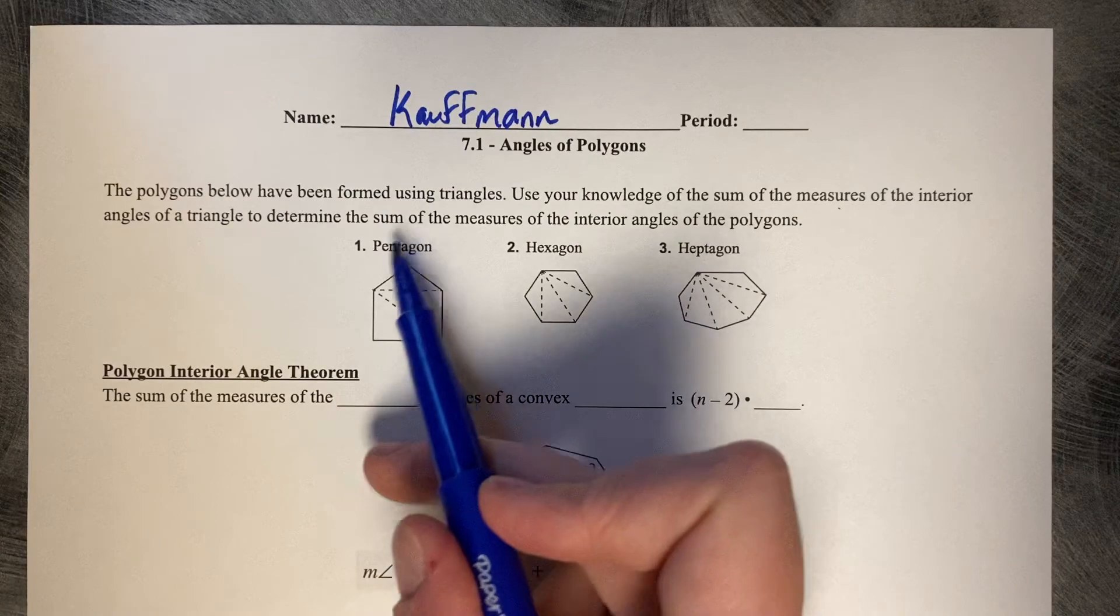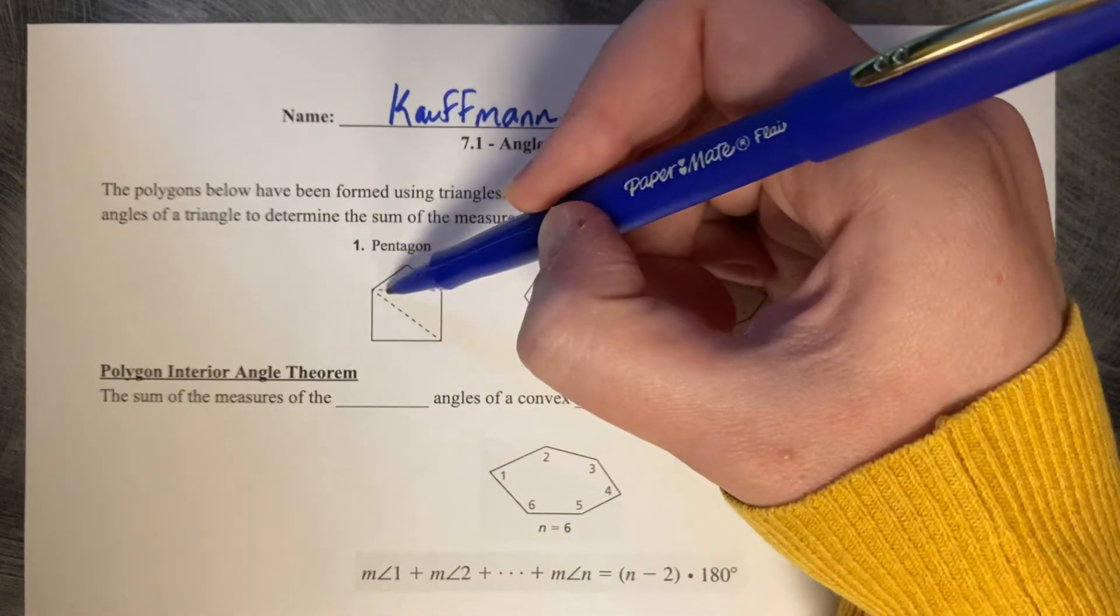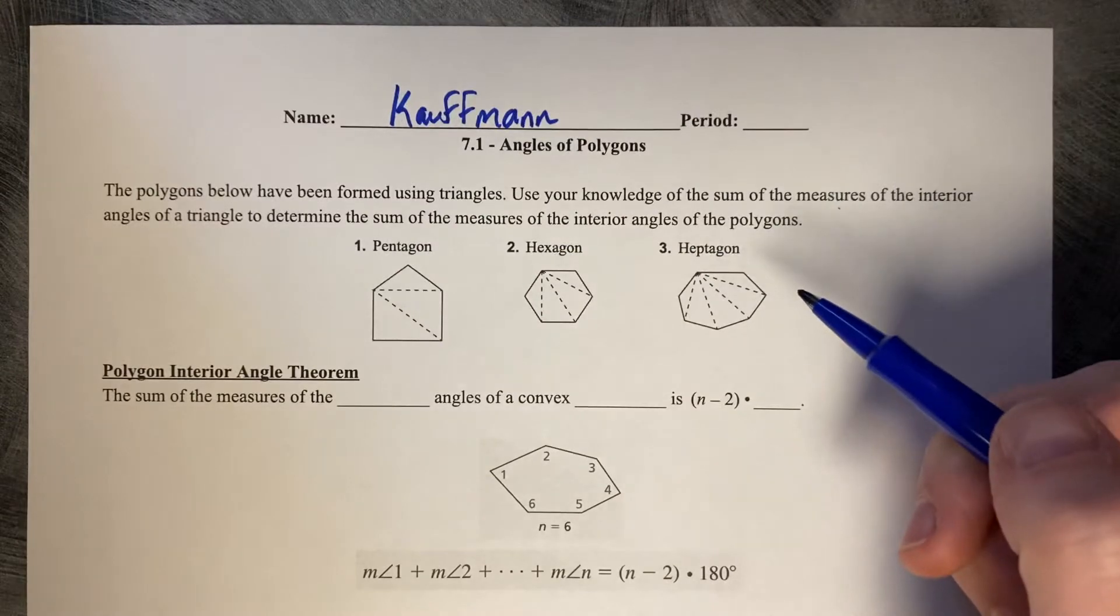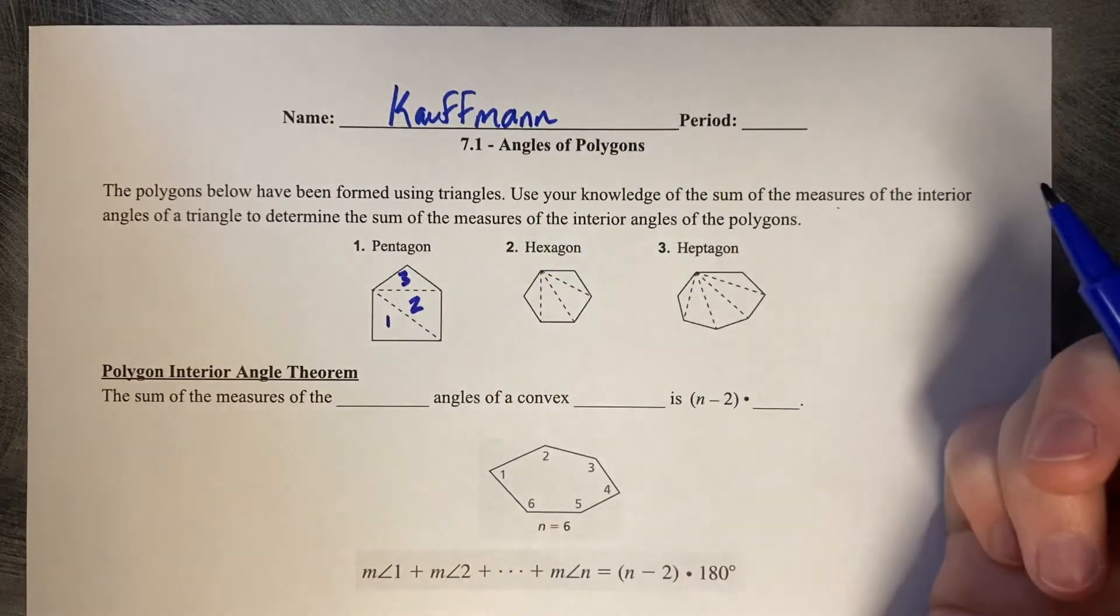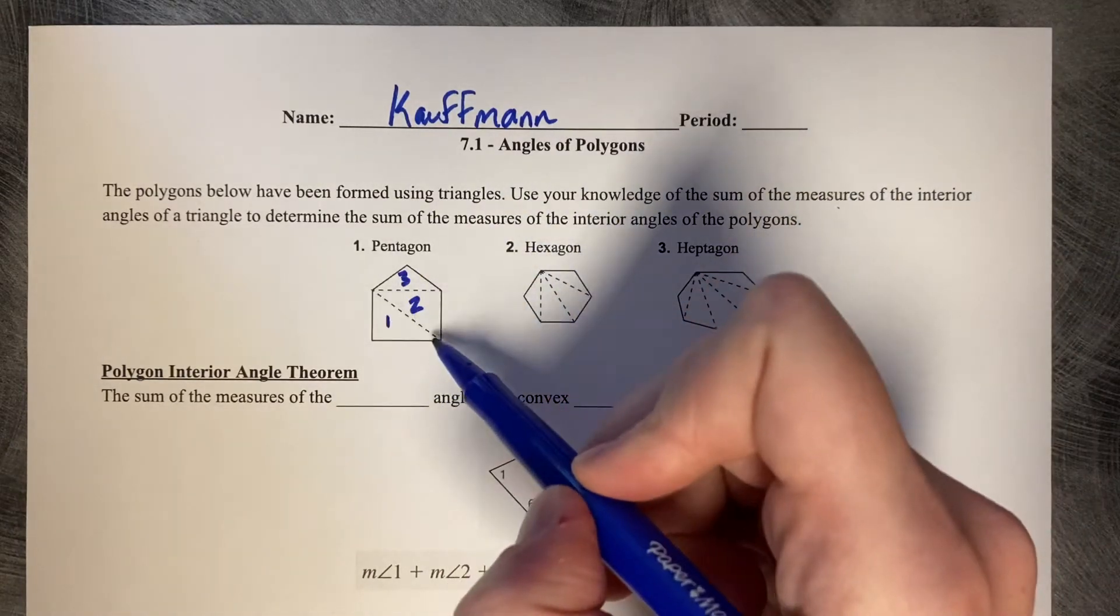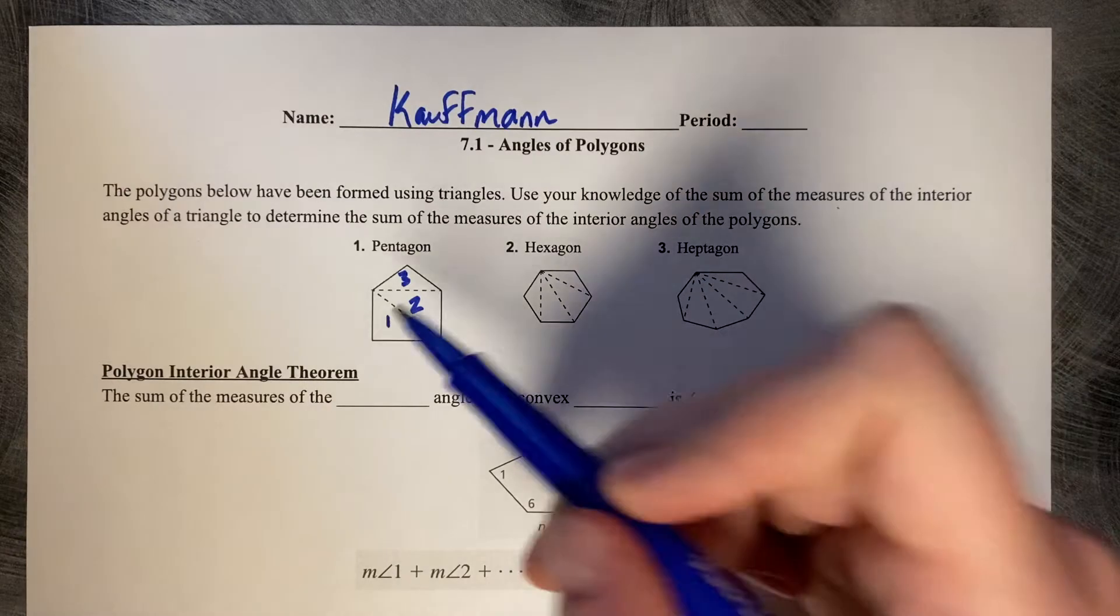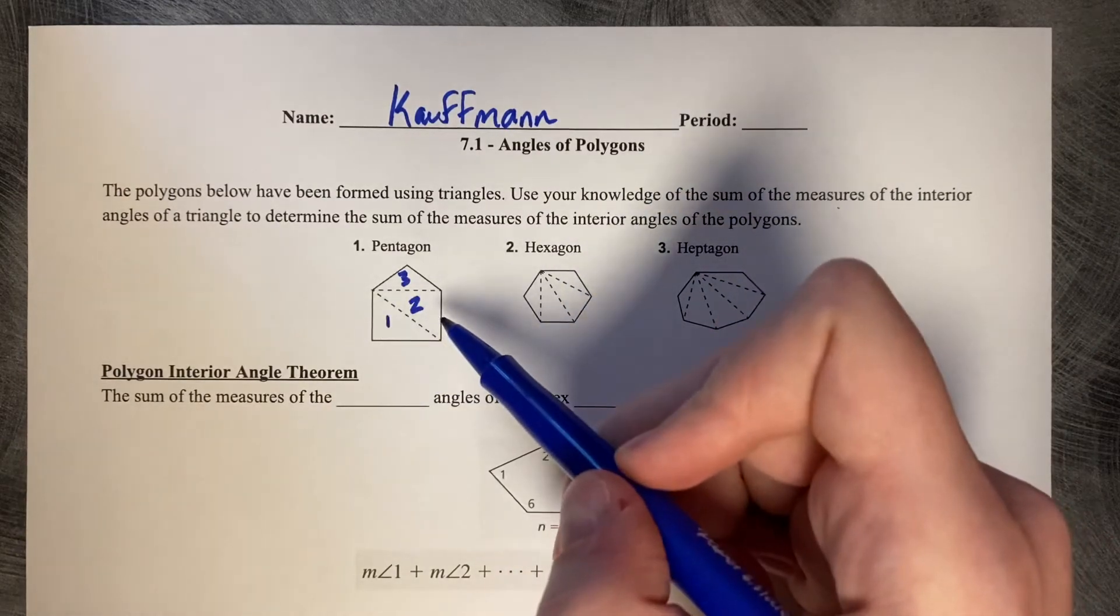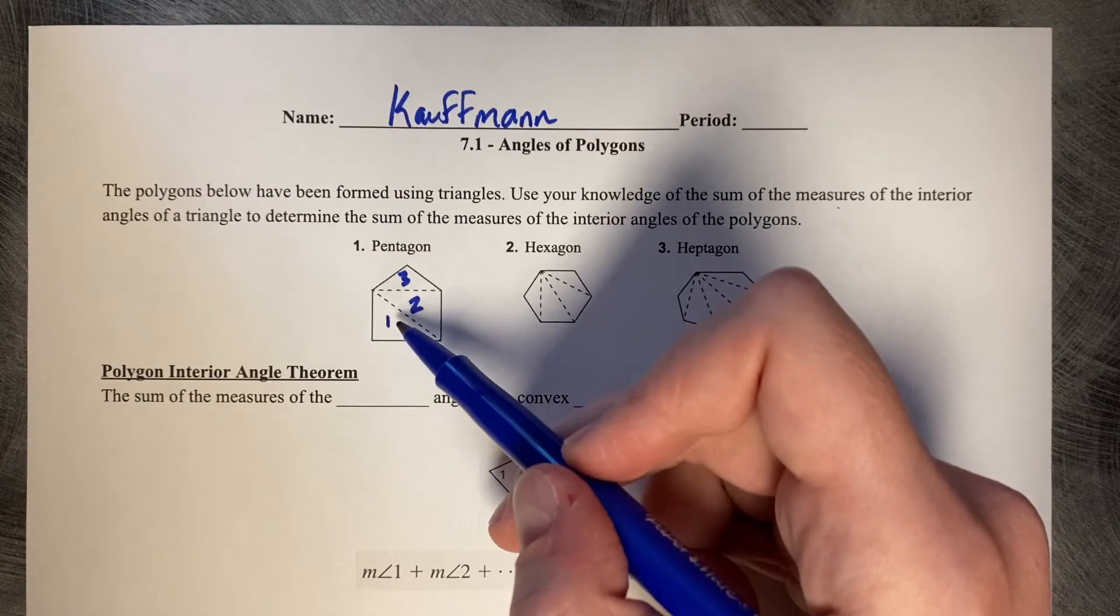So we're talking about a pentagon here. If you draw from one vertex to each of its opposite vertices, it splits it into one, two, three triangles. Each of these triangles has the sum of whatever one triangle has.